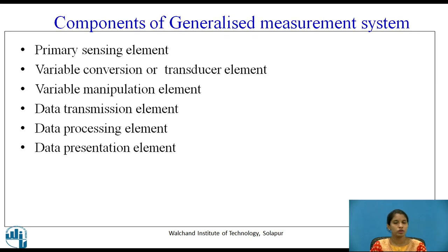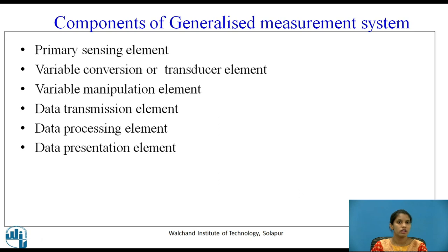Components of generalized measurement system: primary sensing element, variable converger or transducer element, variable manipulation element, data transmission element, data processing element, and data presentation element.